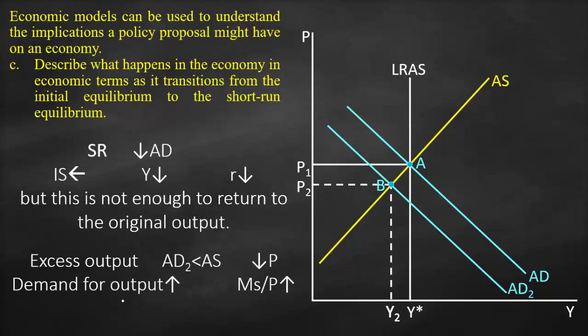There is higher demand for output because money supply increases as price falls. This results in a lower interest rate. Additionally, the supply of output will be lower because we now have a higher real wage, making firms reluctant to produce more.